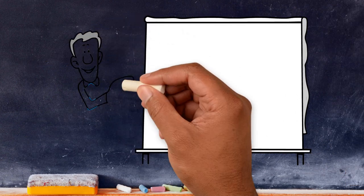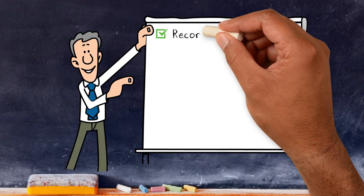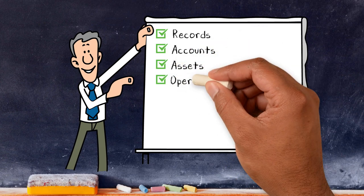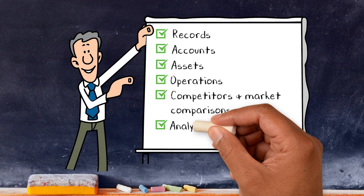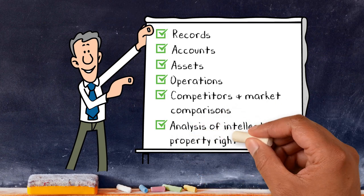As a general rule, buyers will want to look at records, accounts, assets, operations, competitors and market comparisons, and an analysis of intellectual property rights.